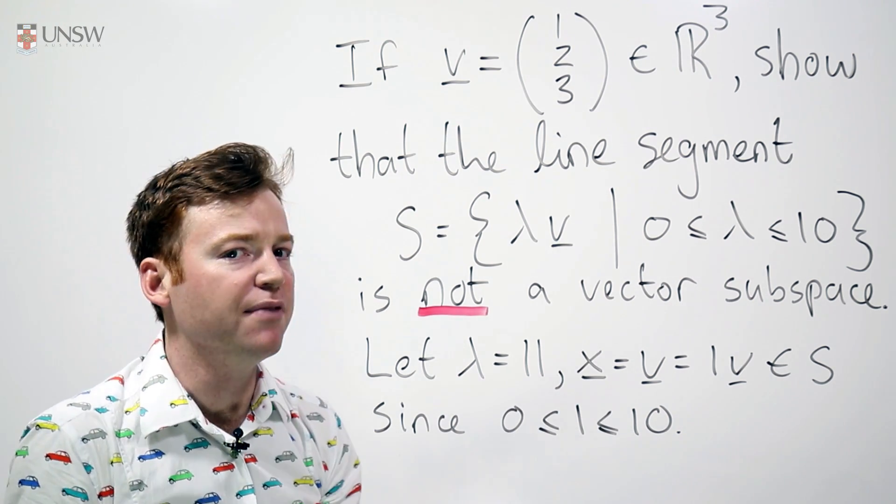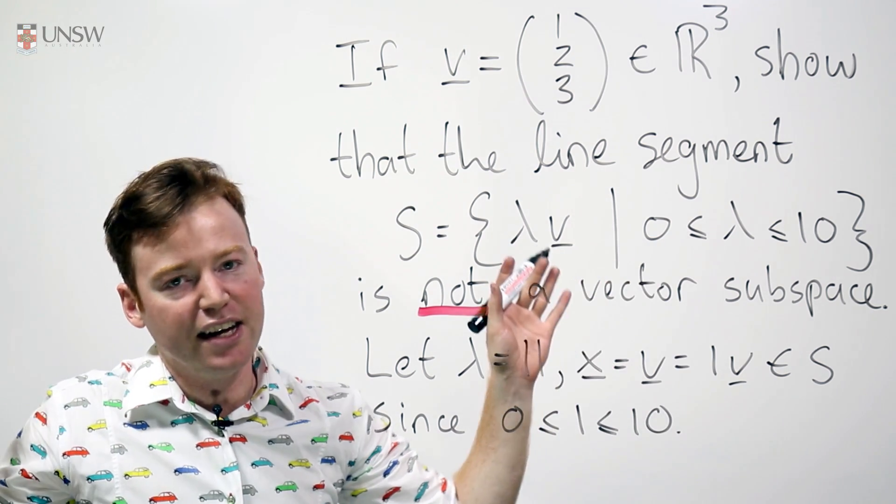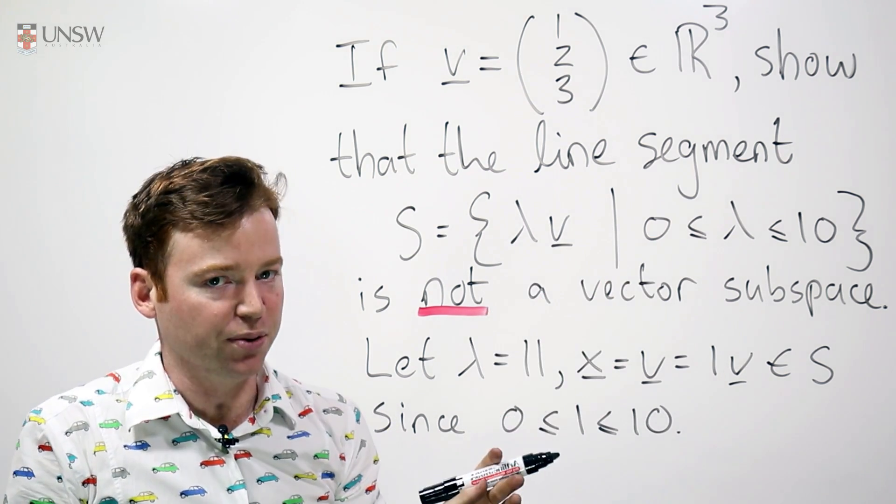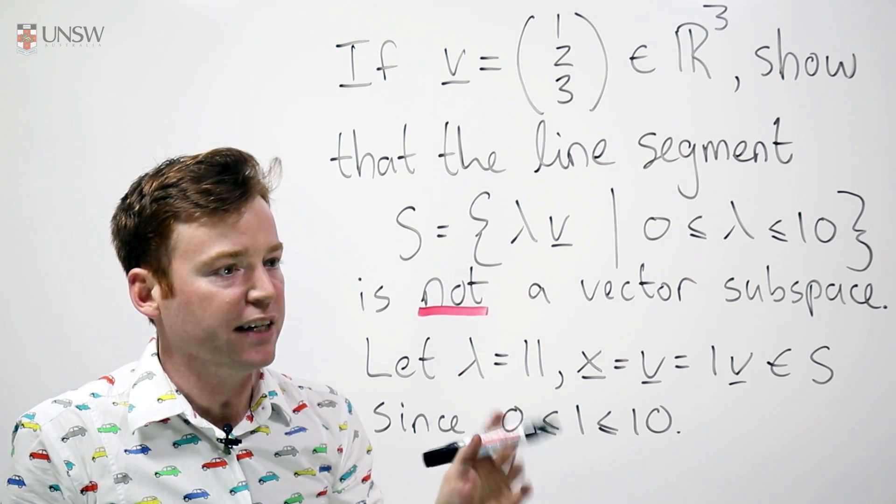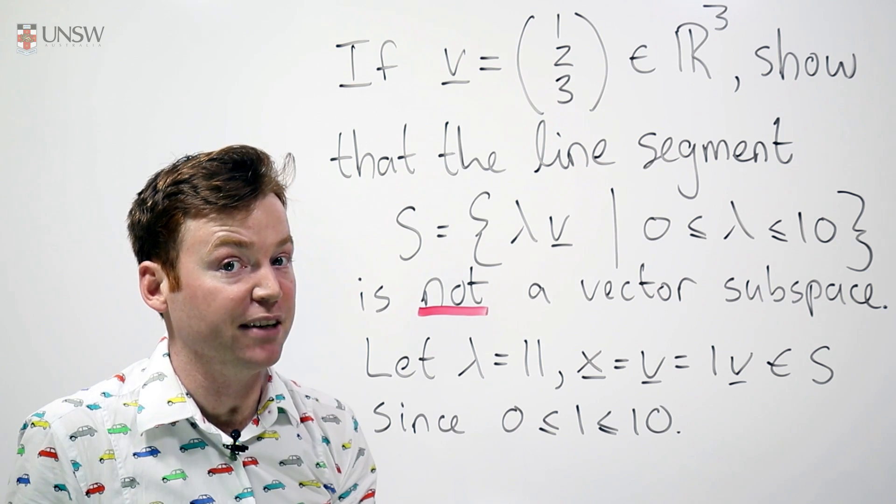I can't just scale multiply some random vector by 11, find that it's not in the set and say, hey, S isn't closed under scalar multiplication. No, you need to start from a vector which is in S and you need to be very explicit about what that vector is.